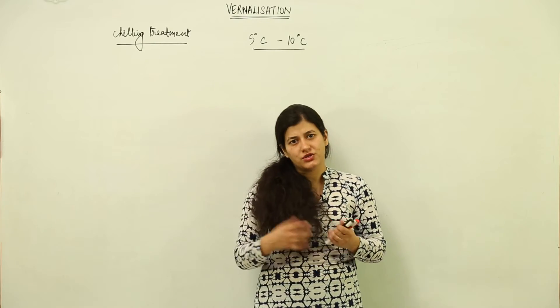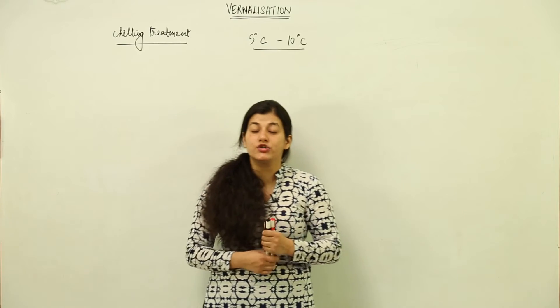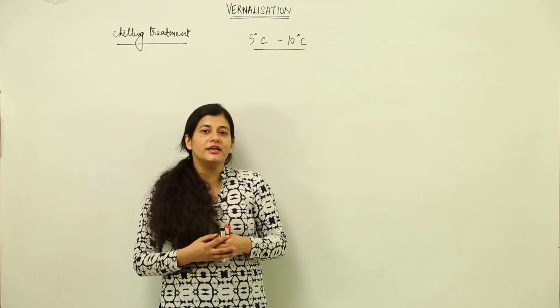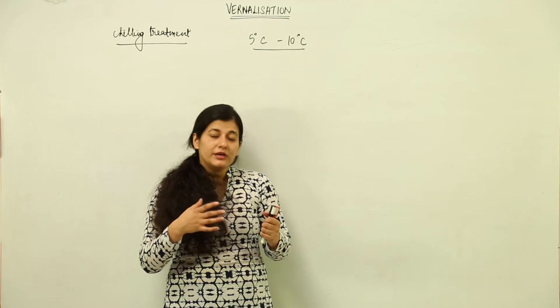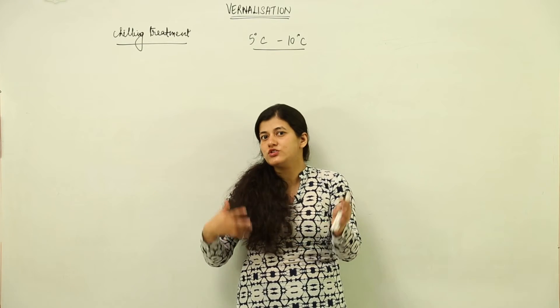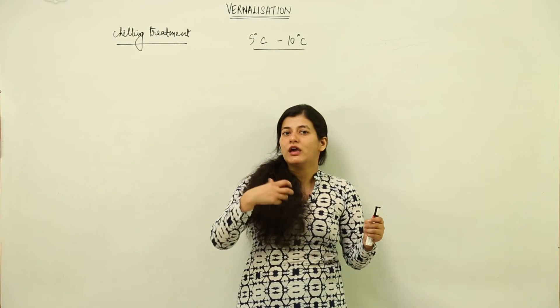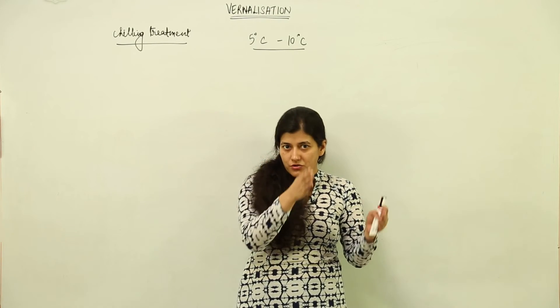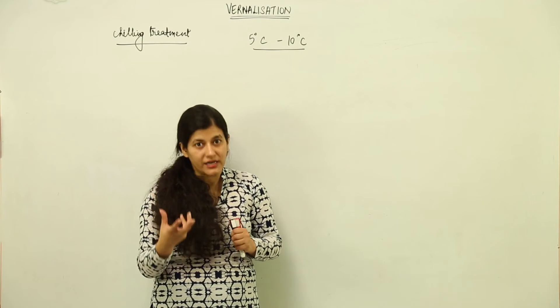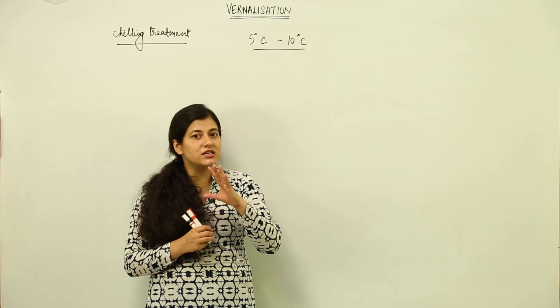There is another term that you must know: de-vernalization. This is often done in the case of onion plants. De-vernalization would stop the flowering. We would give higher temperature in order to avoid flowering, and this is observed in the case of onions. In case of onions, we are least concerned with their flowers.